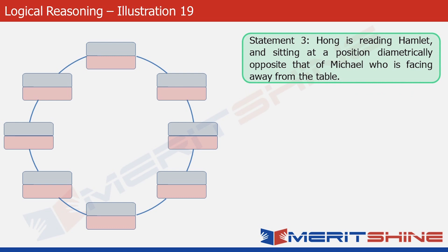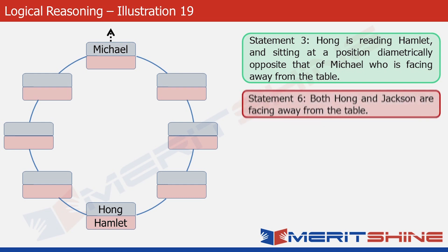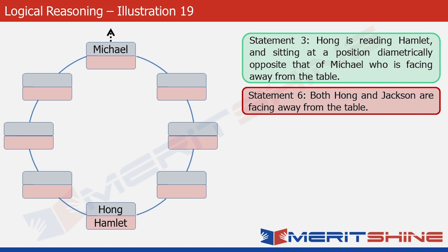The first statement we use is statement three. It tells us that Hong, who is reading Hamlet, is sitting at a position diametrically opposite to Michael. We can pick any two diametrically opposite positions and fill them with Hong, Hamlet, and Michael. The statement also tells us that Michael is facing away from the table, so let's put an outward arrow at Michael's position. Statement six tells us that Hong is also facing away from the table, so let's put an outward arrow at Hong's position as well.